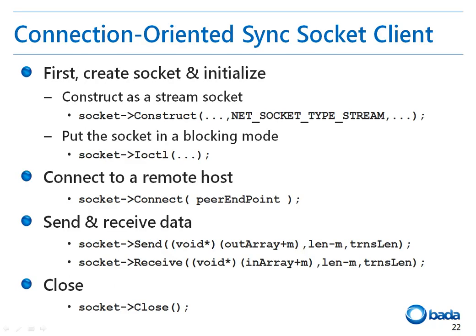Now let's have a look at the procedures to create a synchronous socket client with connection-oriented communication mode. First, it is necessary to create and initialize the socket. You can create a connection-oriented socket by setting the socket type of the construct function to stream. To set the socket mode to blocking mode, the IOCTL function is used. To connect the socket to the remote host, the connect function is used, with the endpoint data structure containing the IP address and port number. To send and receive data, the send and receive functions are used. When the communication is complete, the socket is closed.